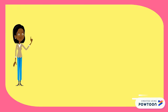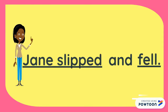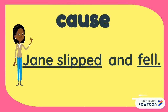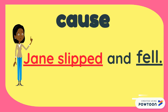Let's try it in sentences now. This sentence says: Jane slipped and fell. What is the cause? Which event happened first — Jane slipped, or she fell? That's right. Jane slipped first, so that is the cause.